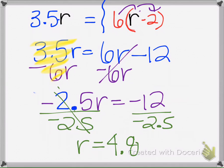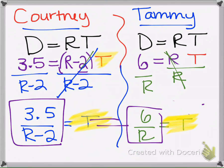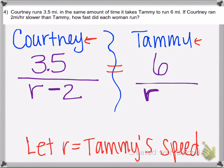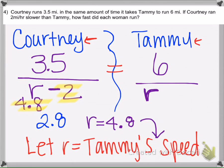So we got R equals 4.8. That's really slow. Well, we're talking about people running. So R, what we got, the R of 4.8, R is Tammy's running speed. Whereas Courtney is 2 miles per hour slower. So 4.8 minus 2 is 2.8. So Courtney runs at 2.8 miles per hour and Tammy runs at 4.8.